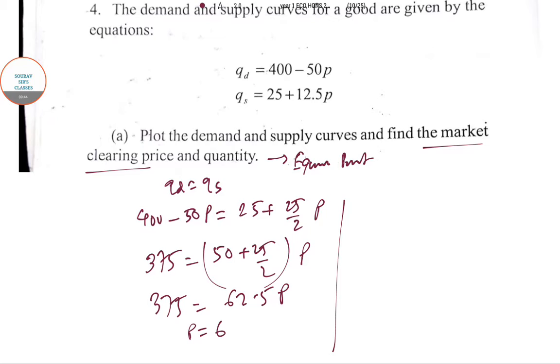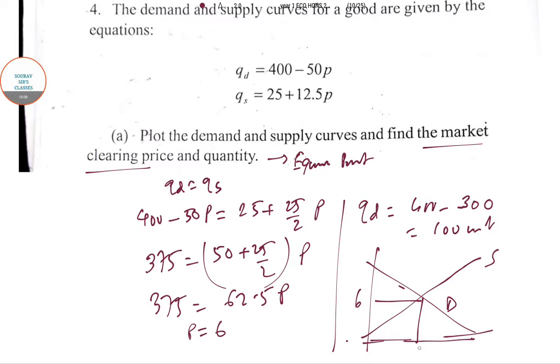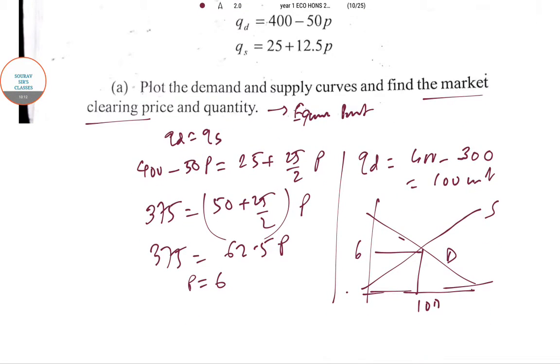At P = 6, quantity demanded is 400 - 50 times 6, that is 300, so 100 units. You just draw the two diagrams. Remember it won't pass through the origin. The supply curve is like this, this is the demand, and these are the two equilibrium points: price equals 6 and quantity is 100 units.